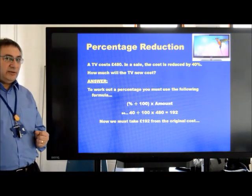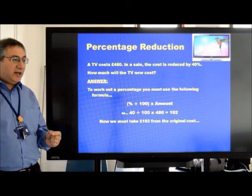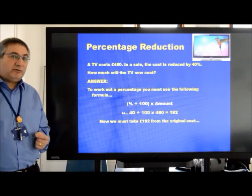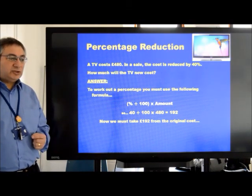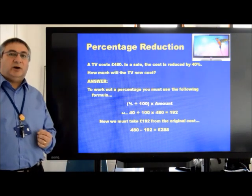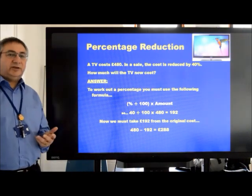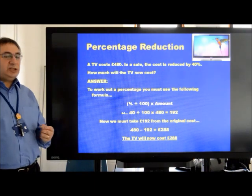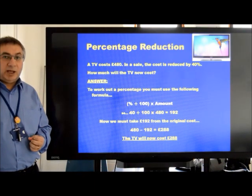Now, this question is about reducing the figure by a certain percentage. So we now have to take our answer, one hundred and ninety-two, from the original cost. So that sum is four hundred and eighty minus one ninety-two, gives us an answer of two hundred and eighty-eight, which is how much the TV will now cost.